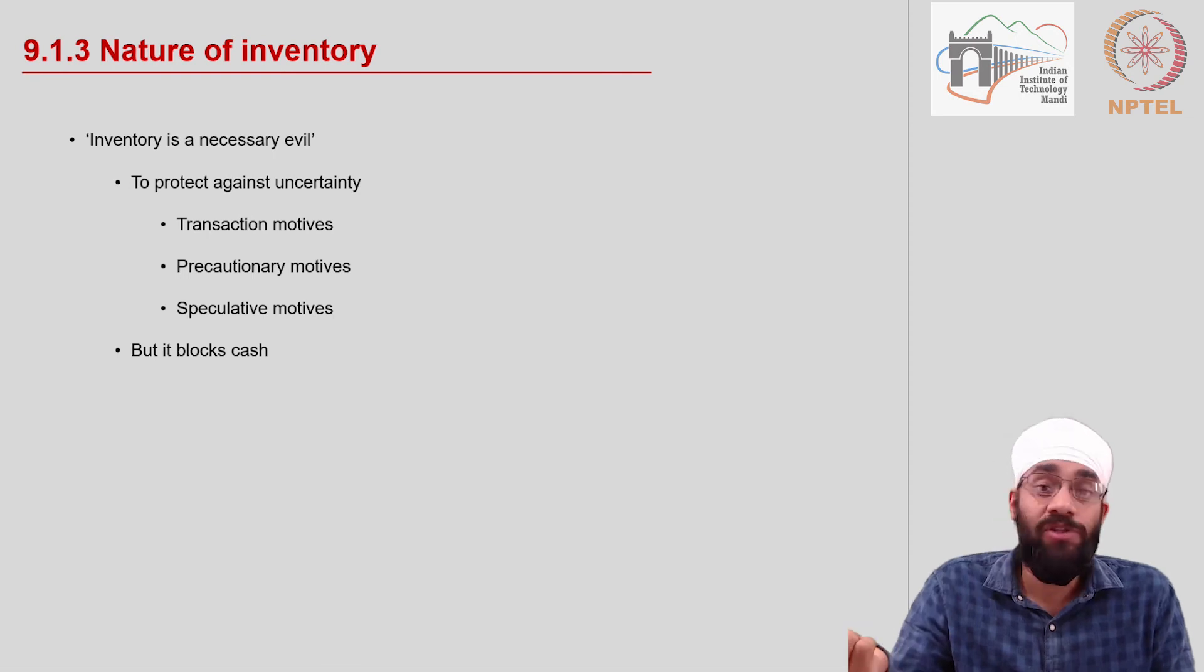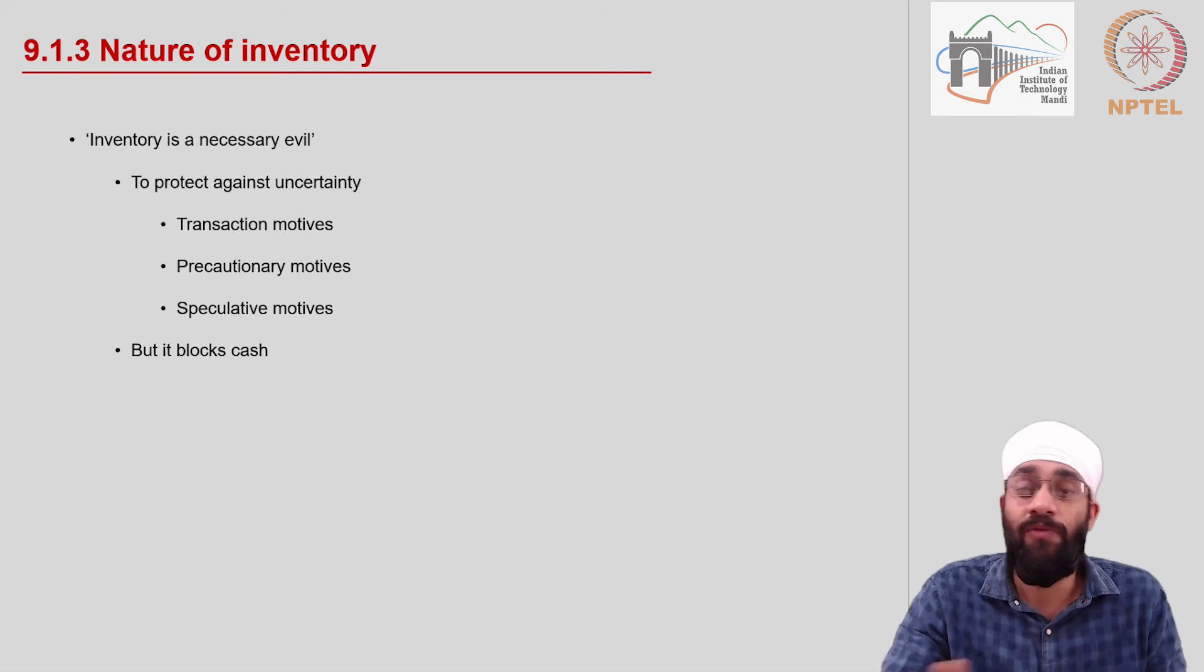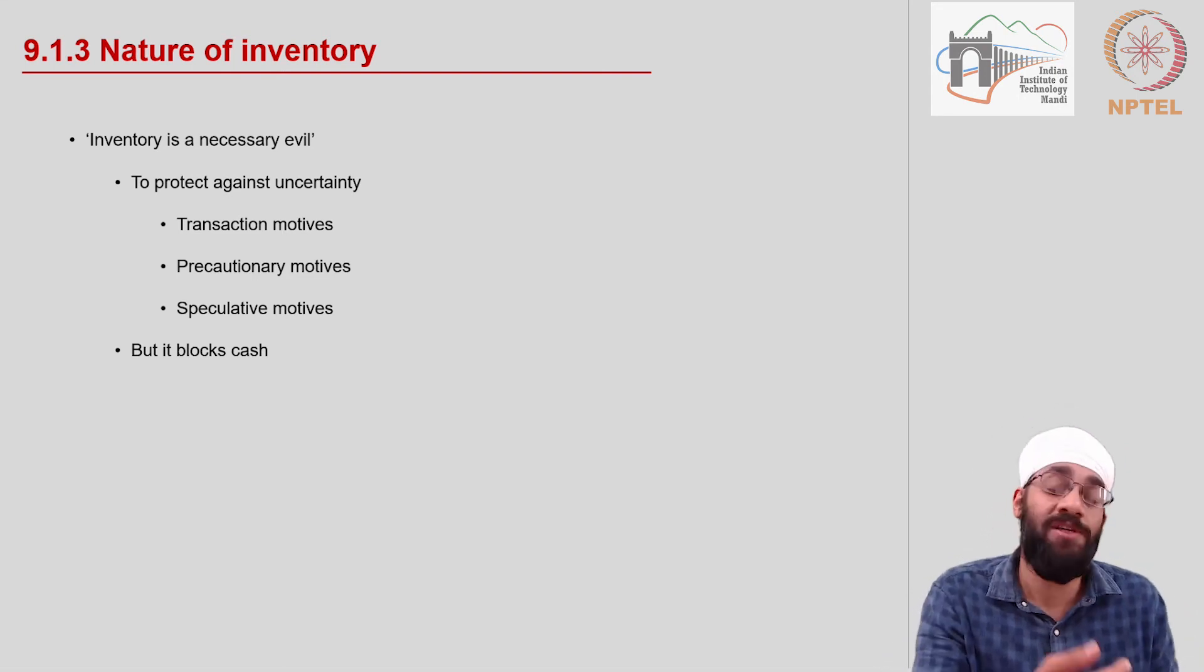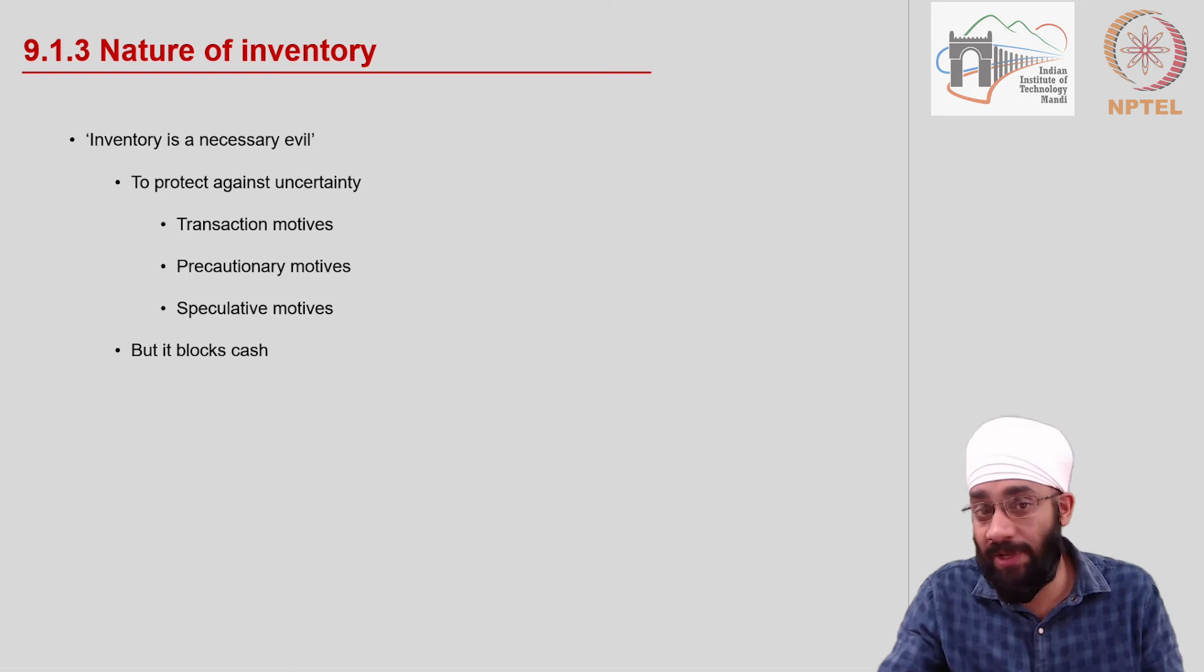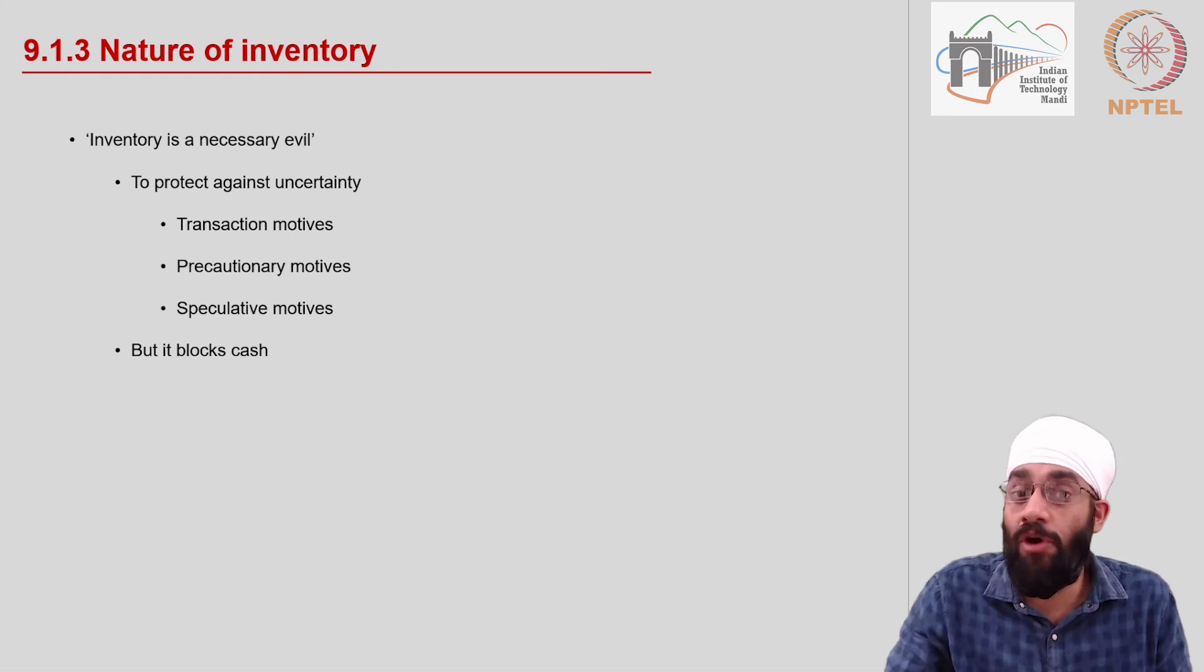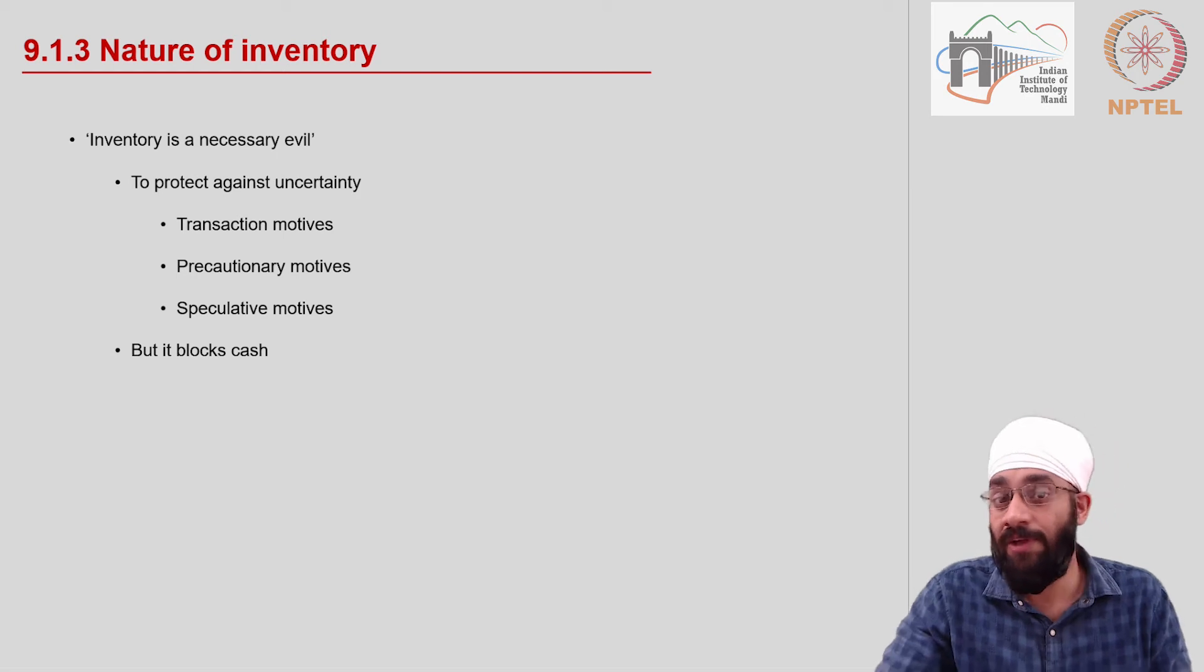Plus there are precautionary motives. What if there is a lockdown for example, the goods are not allowed to move from place A to place B and you do not want to halt the production process. You have to make sure necessary level of stock is available within the premises for example. So some precautionary motives for which you might want to maintain certain level of stock.